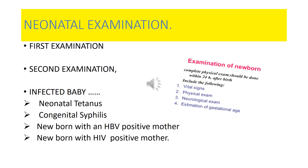Newborns can get infected during delivery or from the mother. One important infection is neonatal tetanus, which can be prevented by following the three C's when cutting the cord. It can also be prevented by vaccinating pregnant females and giving a toxoid vaccination to the newborn in case of at-risk delivery.